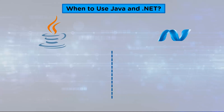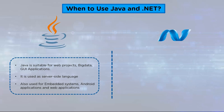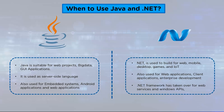Now let us see when to use Java and .NET. Java is suitable for web projects, big data, and GUI applications. It is used as a server-side language for back-end development, embedded systems, Android applications, and web applications. Because Java is portable, you may choose which operating system you want to work on, allowing you to select tools without worrying about compatibility difficulties. .NET is used to build for web, mobile, desktop, games, and IoT. It is also used for web applications, client applications, and enterprise development. .NET has taken over for web services and APIs, and is mostly preferred for Windows API services.